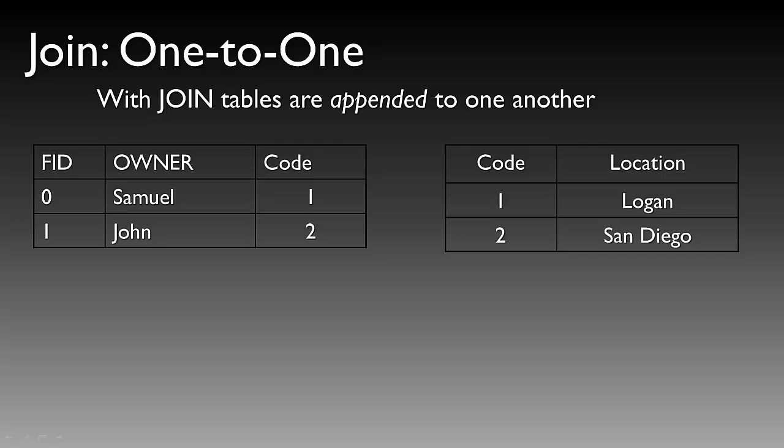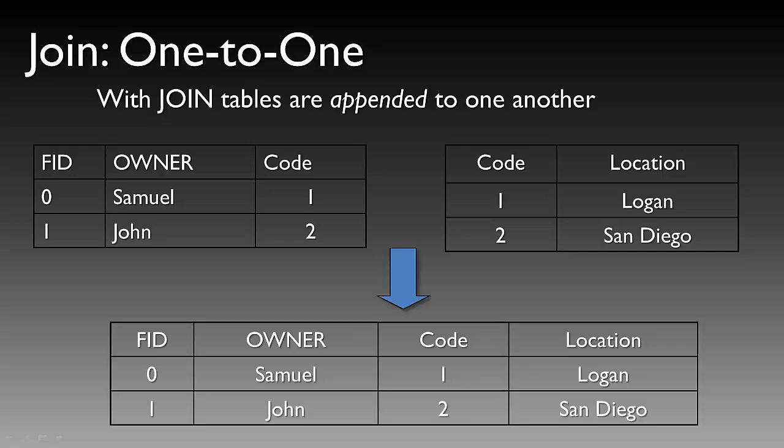In that table we have owners Samuel and John, and a unique identifier called code. In the table on the right, we have a similar column called code and a location column. These two tables are best suited to join together so we know the location of Samuel and John. Using our common field, code, we can join the two tables, resulting in one table with more useful information connected to a feature ID, allowing us to display the data spatially in a GIS.